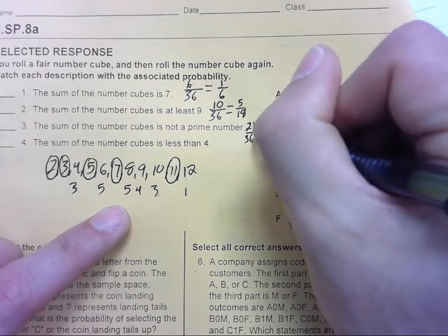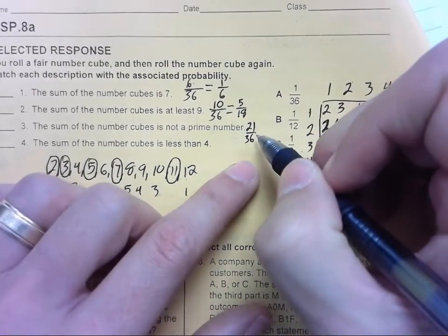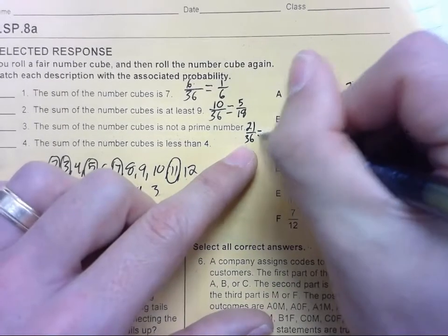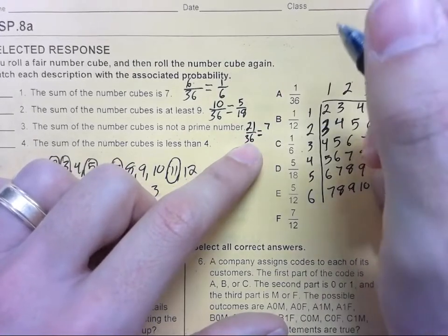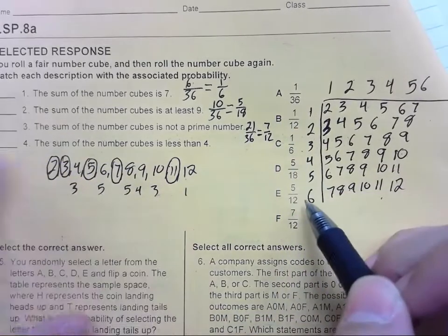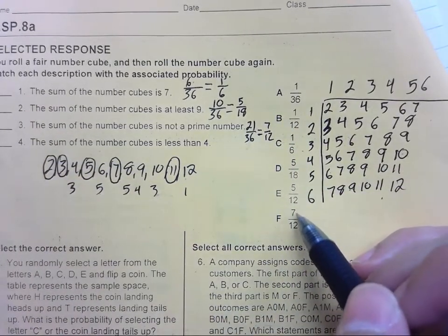Now we can divide these both by 3. 21 divided by 3 is 7, and 36 divided by 3 is 12. So 7/12.